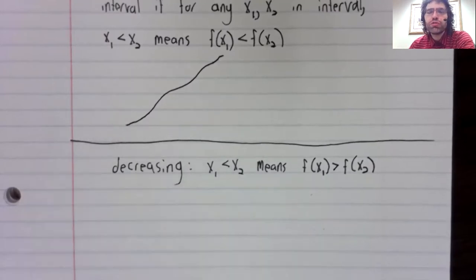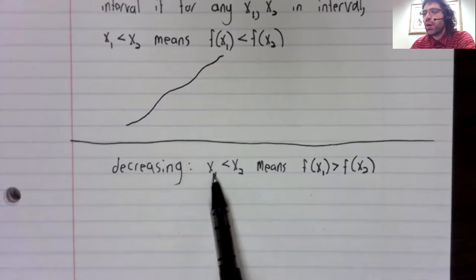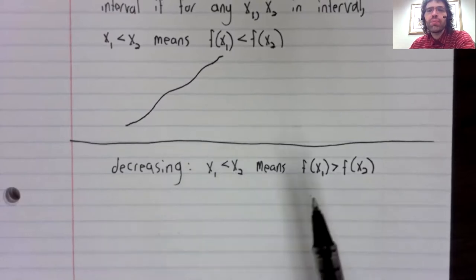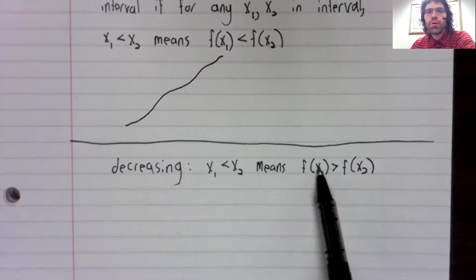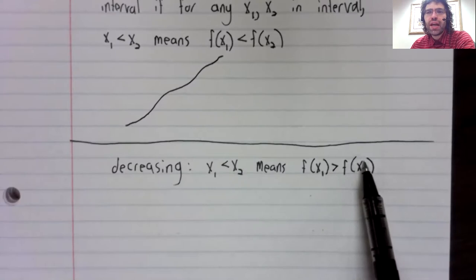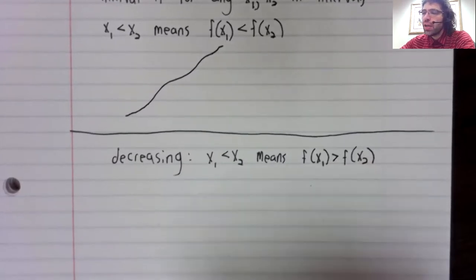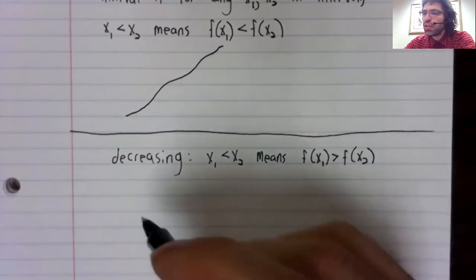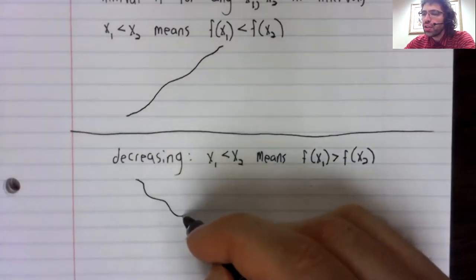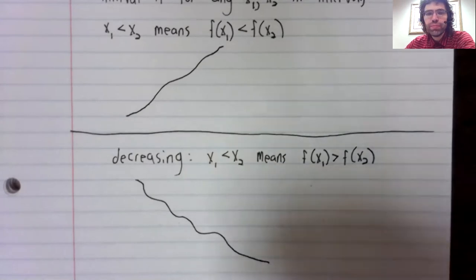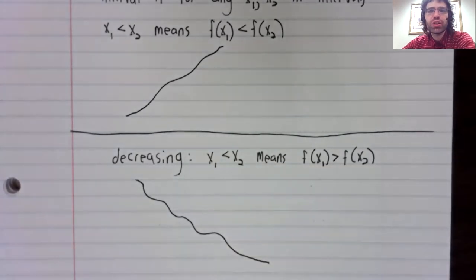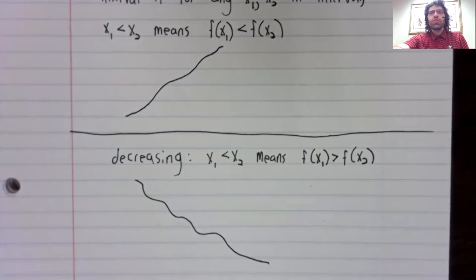But a function is decreasing if one number being less than the other means f of the smaller number is greater than f of the bigger number. And again, the graph literally is decreasing as we go from left to right. And a major application of calculus is determining when graphs are increasing and when graphs are decreasing.